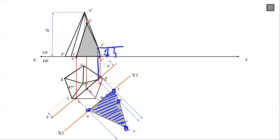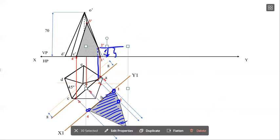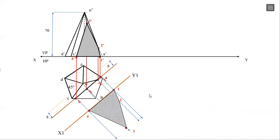This is the sectional view and true shape of the section of a pentagonal pyramid when the sectional plane is inclined to VP. Thank you.